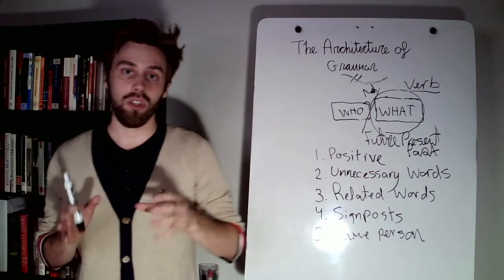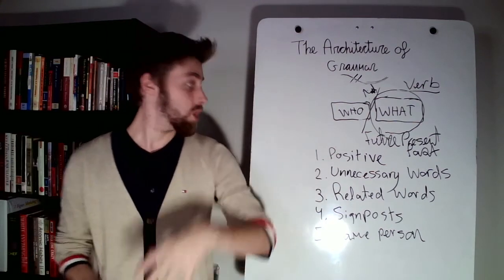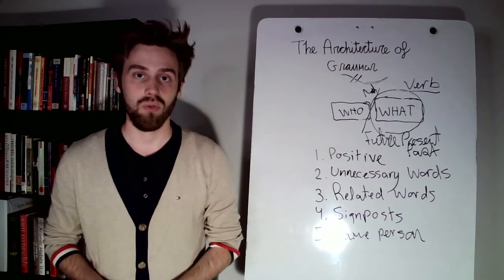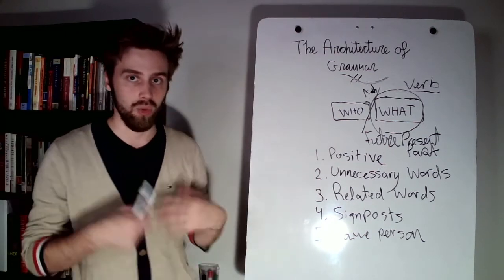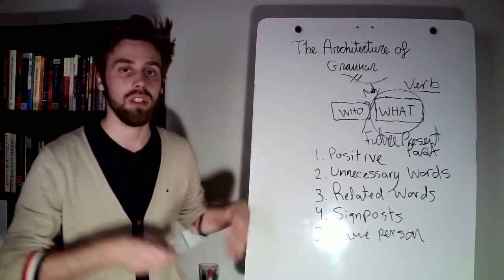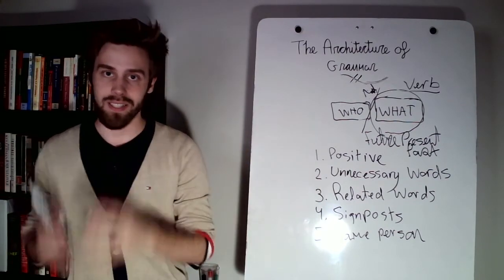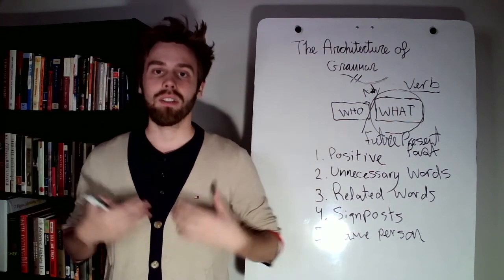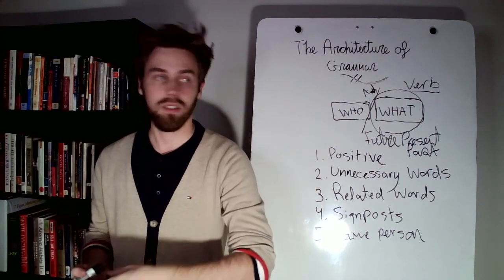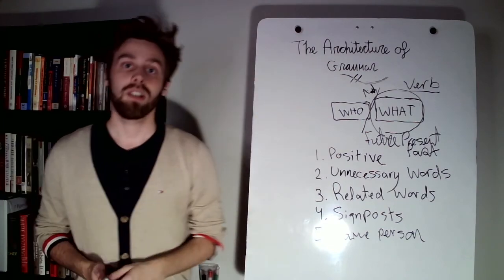So this was lesson 29 in the architecture of grammar. Open your book, the architecture of grammar and go and look for the examples. And there are more elements as well that we haven't discussed in this video. So you'll see examples, you'll have exercises that you can do. And so you'll get the best possible practice when it comes to making writing convincing.